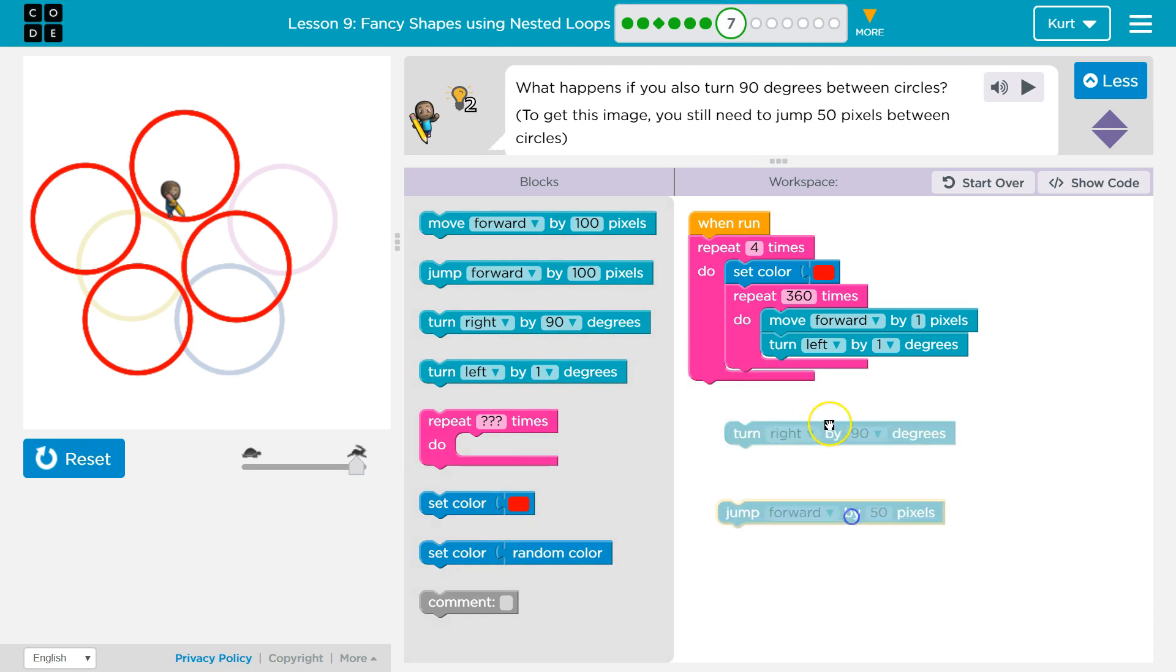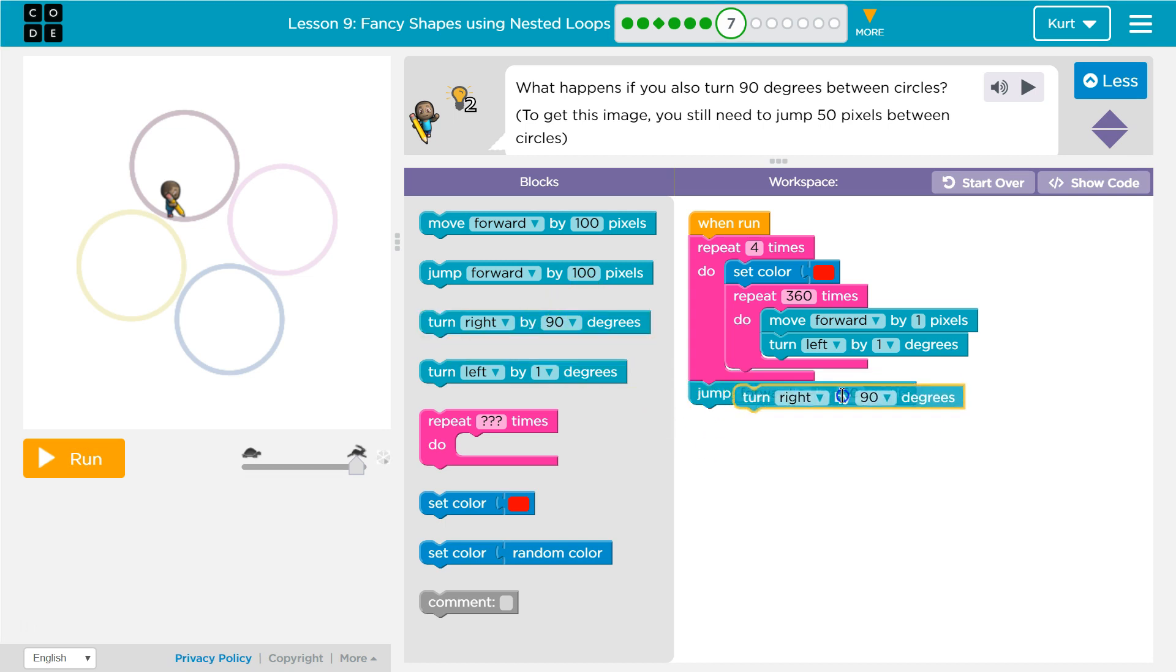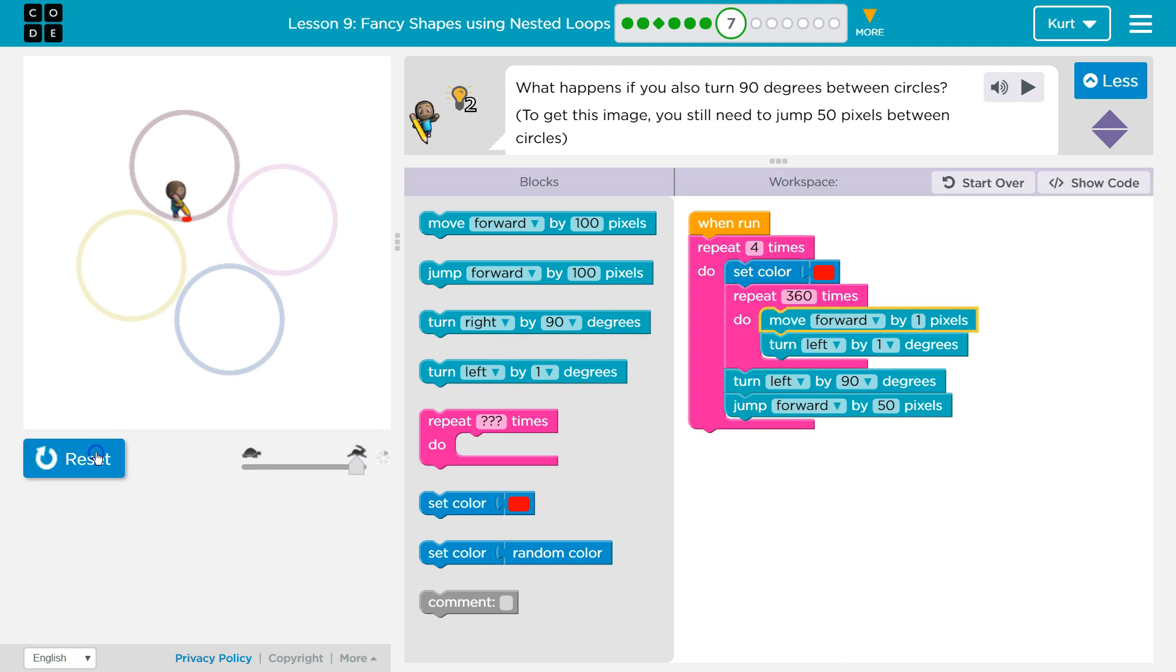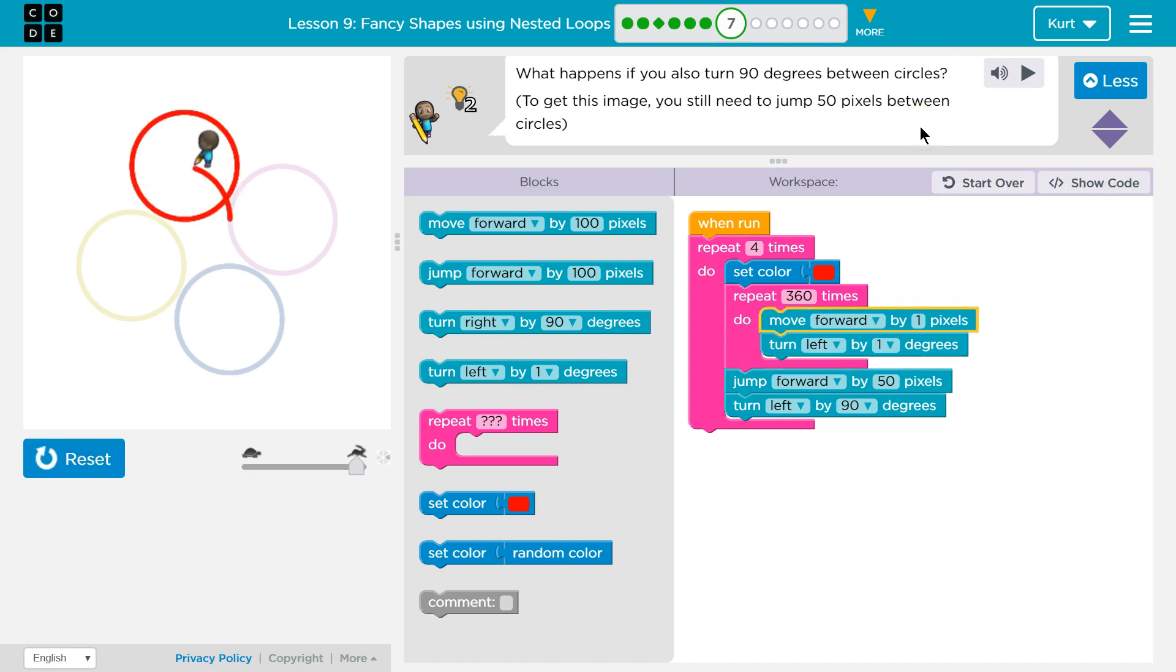What happens if you turn? Let's test this. This is going to draw them in a line. Let's turn 90 the other direction. So, we want to turn 90 and jump forward. Let's do it left. Let's see what this does.